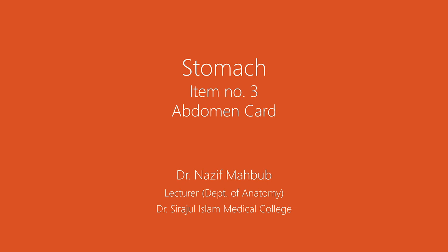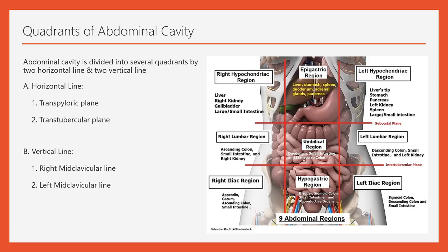To understand the stomach, we need to learn some basics of the abdomen — that is, the quadrants of the abdomen. When you learn about the visceras, you need to know properly the positions in which they lie within the abdomen. The abdominal cavity is divided by two horizontal lines and two vertical lines. The horizontal lines are named the transpyloric plane and the transtubercular plane, and the vertical lines are called the right midclavicular line and the left midclavicular line.